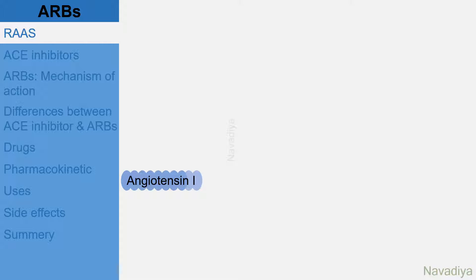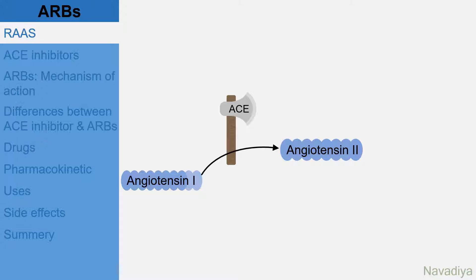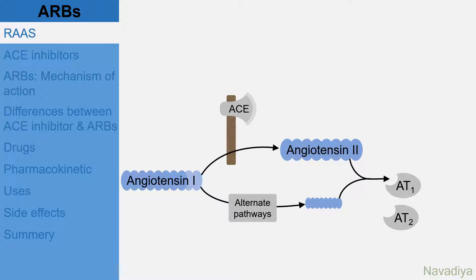In the video on renin angiotensin aldosterone system, we have seen that angiotensin 1 is converted by angiotensin converting enzyme, also called ACE, into angiotensin 2. Apart from ACE, there are also other pathways through which angiotensin 2 is synthesized. Now there are two subtypes of angiotensin receptors: AT1 and AT2. AT1 is responsible for most of the known effects of angiotensin 2, like increase in blood pressure and constriction of the efferent arteriole in the kidney. The function of AT2 is not clearly understood yet.